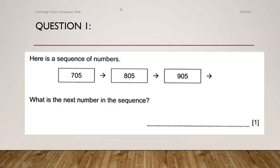This is the first question. Here is a sequence of numbers. What is the next number in the sequence? When you get a question like this, you will get one mark. This is how they indicate the mark. You have to find the next number. To find the next number, you have to identify this pattern.